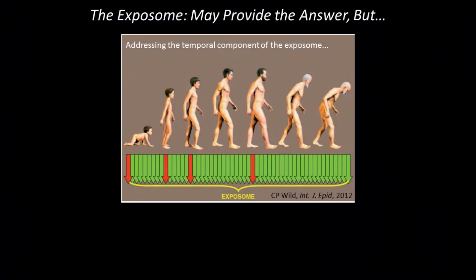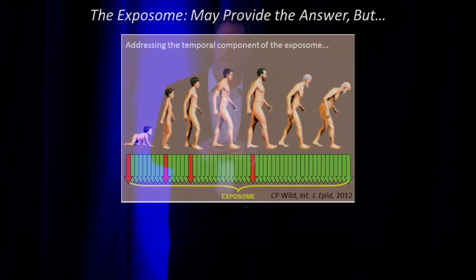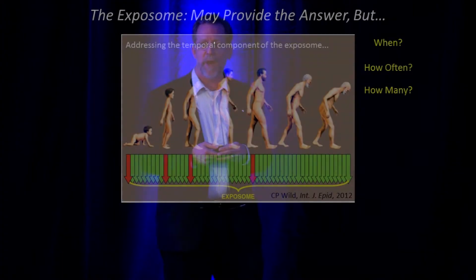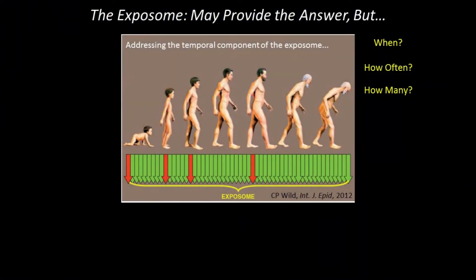Ideally, the green arrows at the bottom indicate that we'd like to collect samples continuously, or at least almost continuously over an entire lifetime. And this raises questions: when are we supposed to do it? How many are we supposed to collect, and how often is it feasible to do this? And right now, I think it would be argued that it's not feasible.